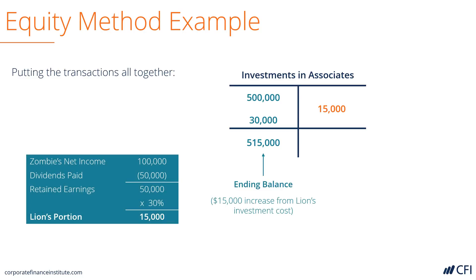Here's the whole Zombie company. The whole company had net income of $100,000, $50,000 of dividends, and therefore retained earnings of $50,000. Each of those items gets multiplied by 30%, as that's Lion's proportionate share. Hopefully this has illustrated how to perform the equity method of accounting.